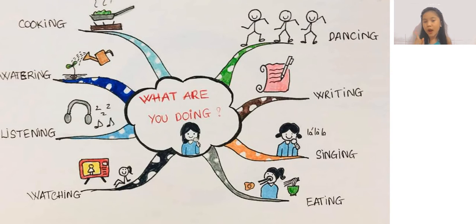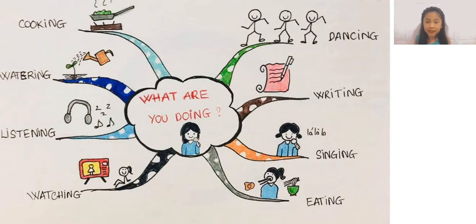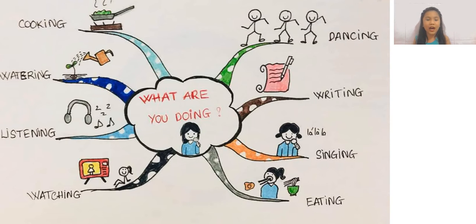But be careful. 'What are you doing' and 'what do you do' are very different. 'What are you doing' is about the actions that you're doing right now. But 'what do you do' is about your job. If someone asks, 'What do you do?' you say, 'I am a cook' or 'I am an engineer.'